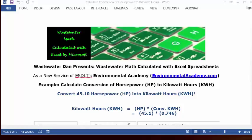Today's problem reads: convert 45.10 horsepower into kilowatt-hours. We're going to complete this conversion by calculating kilowatt-hours in a formula. So we're going to set up the formula: kilowatt-hours equals horsepower times the conversion factor to kilowatt-hours. The conversion factor is 0.746.